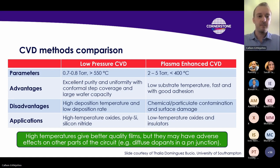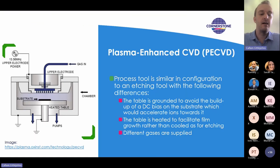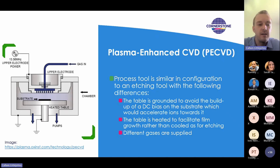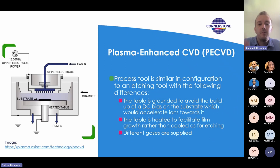The left hand side shows what a CVD system would look like, and you may think that's almost the same as an etching system — and you'd be right. The key differences are shown on the right hand side. The main one is that in this case we actually ground the table, and the reason for that is to prevent an accumulation of bias — we don't want to accelerate high energy ions and etch away material in this case.